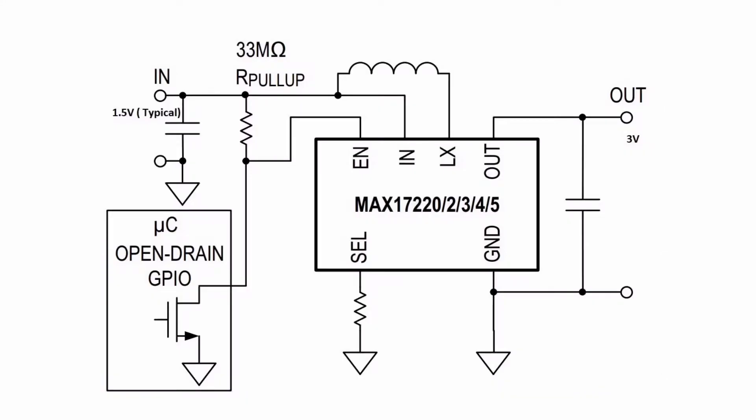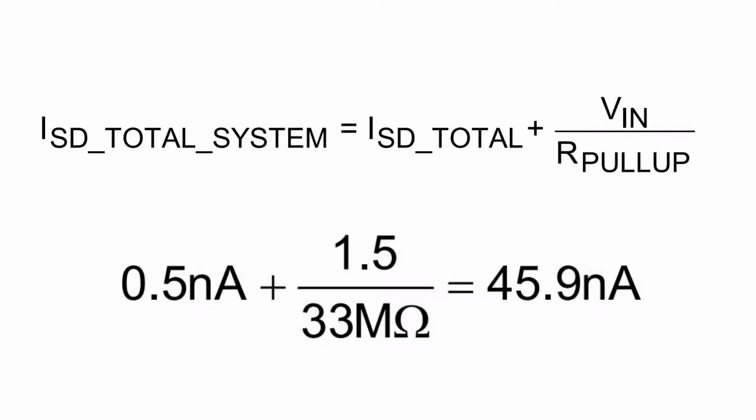For example, if the enable pin is connected to the open drain GPIO of the microcontroller as in the figure, the input quiescent current of the system configured for an input voltage of 1.5 volts with a pull-up resistor of 33 mega ohms will be as shown.